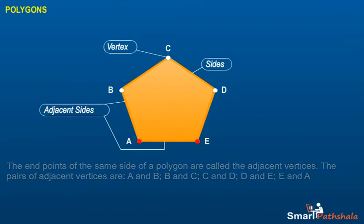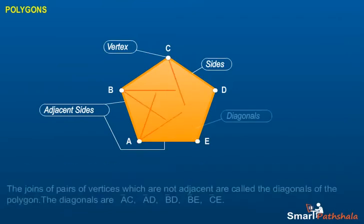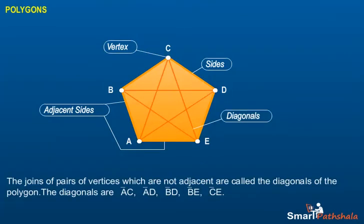The joints of pairs of vertices which are not adjacent are called the diagonals of the polygon. The diagonals are AC, AD, BD, BE, and CE.